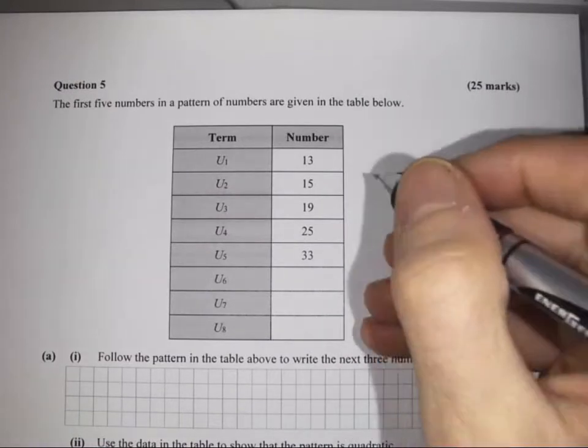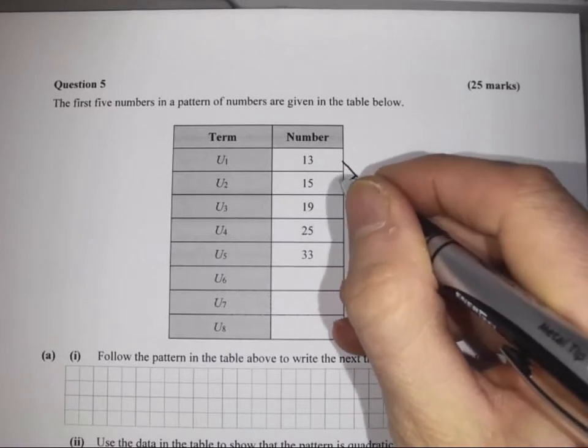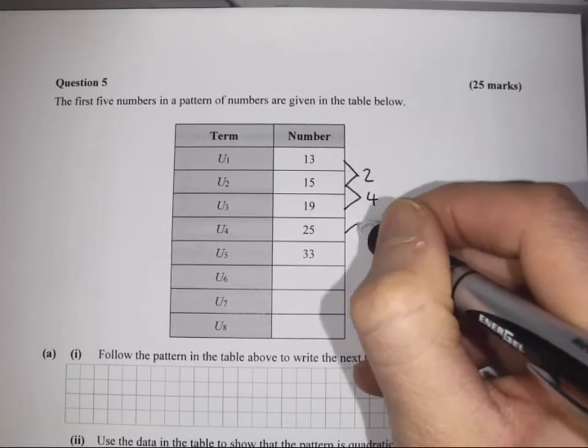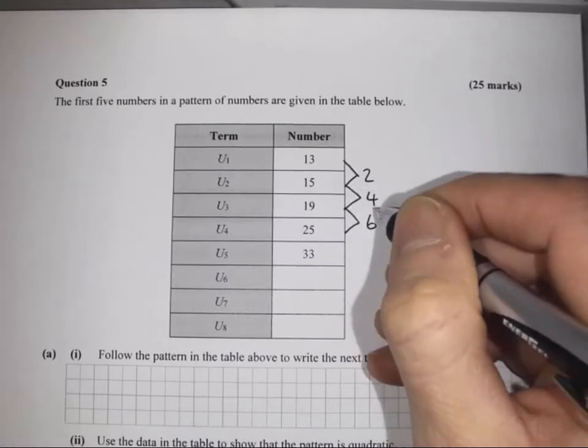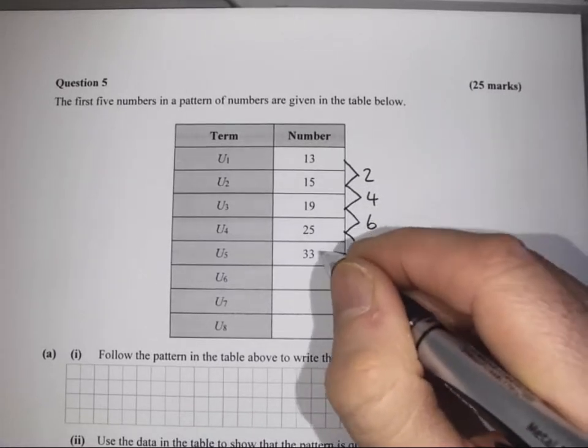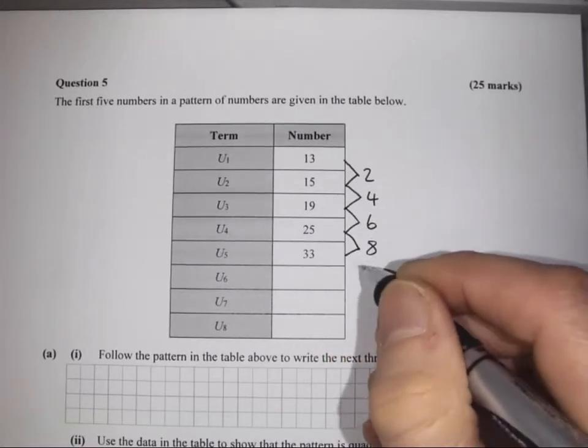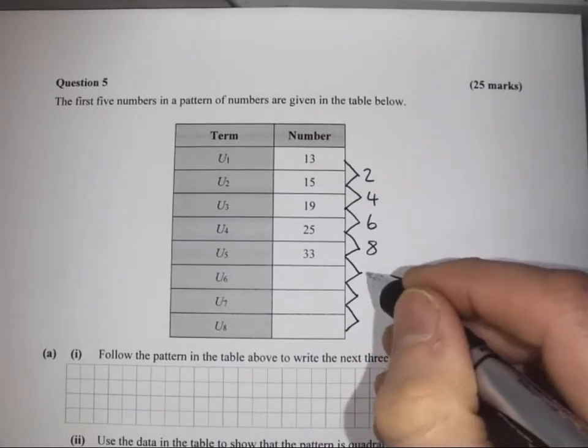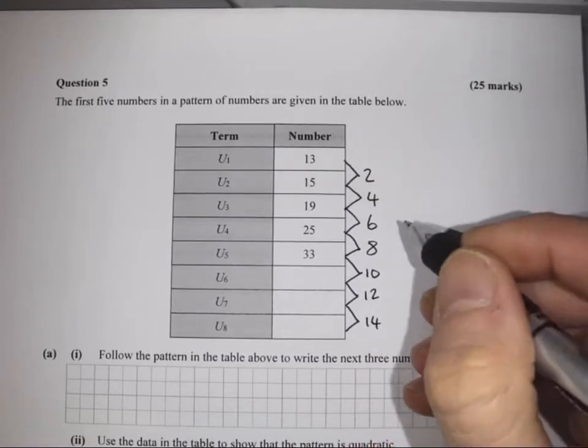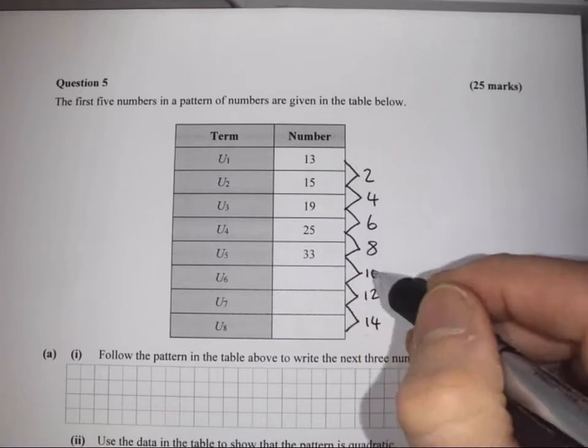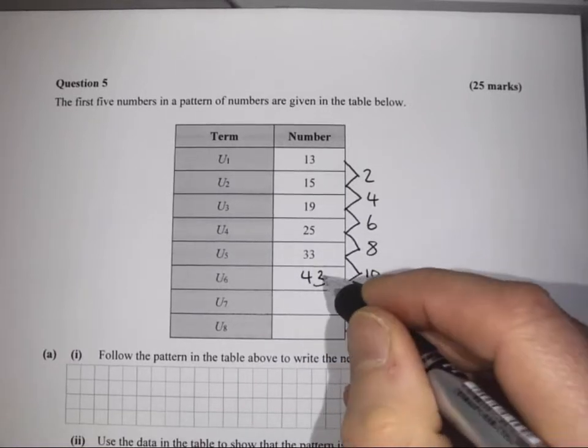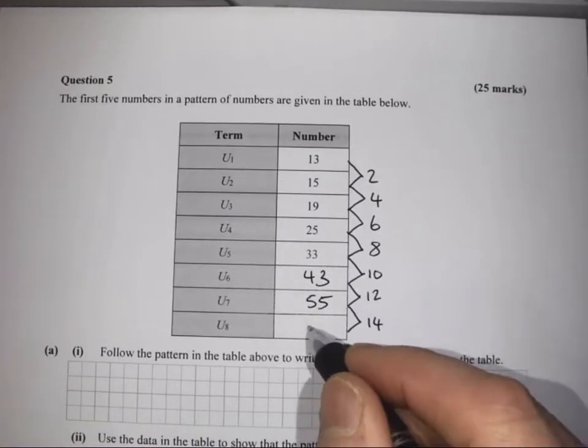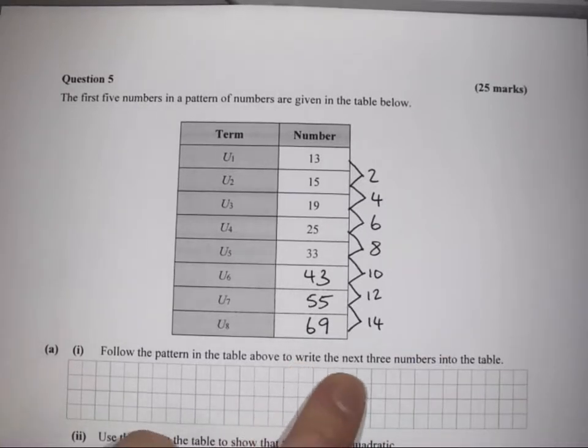Looking at 15 and 13, 15 take away 13 is 2. 19 take away 15 is 4. 25 take away 19 is 6, and 33 take away 25 is 8. So we can see a pattern: 2, 4, 6, 8, 10, 12, 14. So 33 plus 10 is 43, 43 plus 12 is 55, and 55 plus 14 is 69.